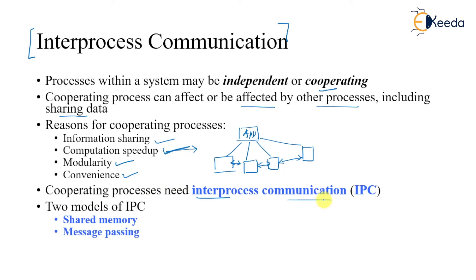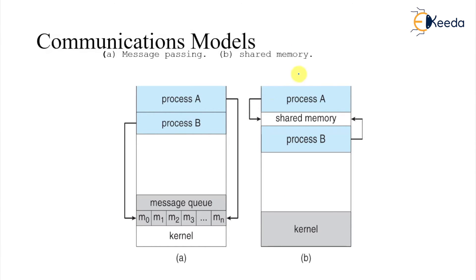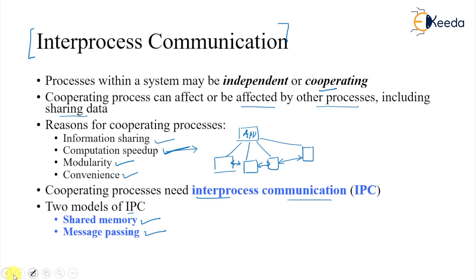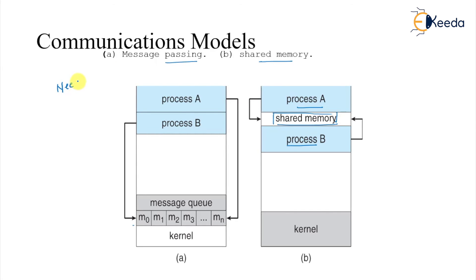Cooperating processes need inter-process communication (IPC), and the models of IPC are either shared memory or message passing. With shared memory, process A and process B can both access a shared variable or shared memory. With message passing, process A produces messages — message 0, message 1, message 2 — and process B reads those messages. These are the two communication models that enable inter-process communication.